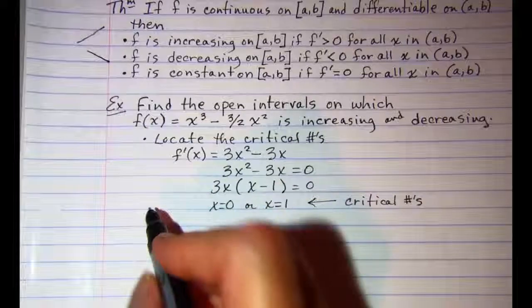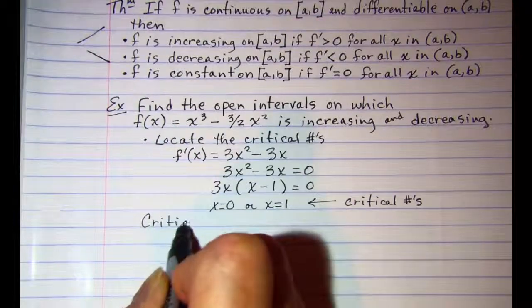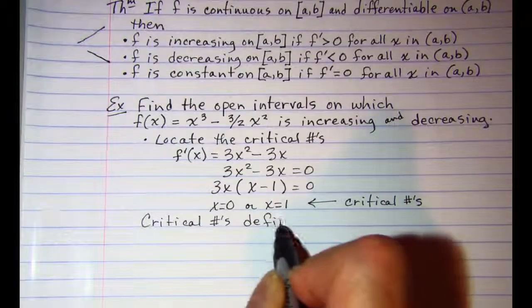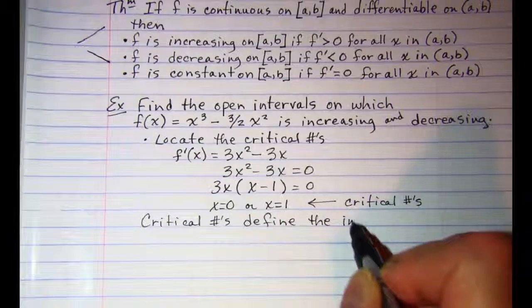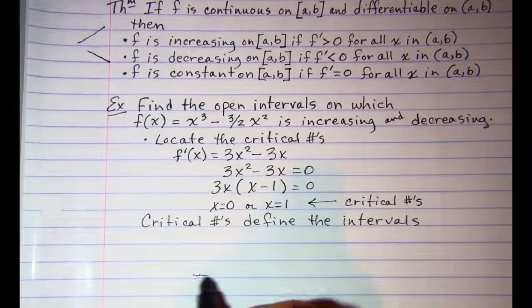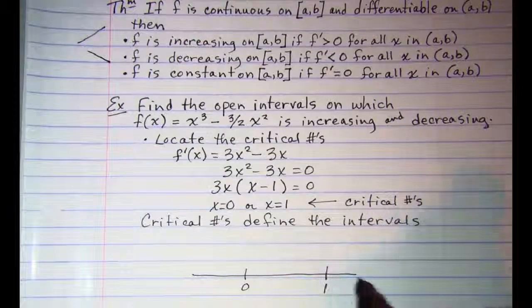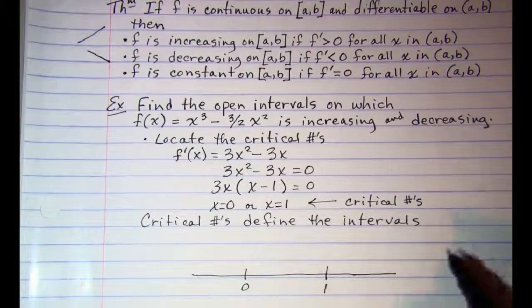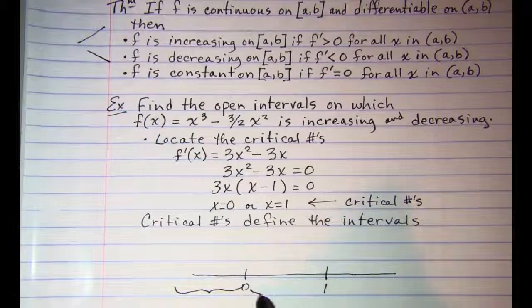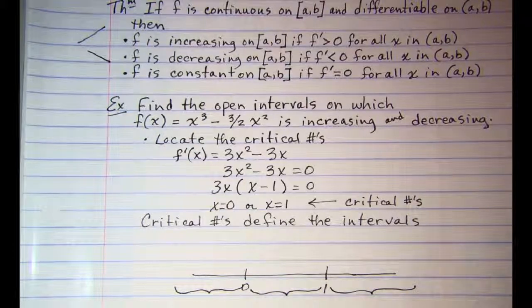Now these critical numbers define the intervals. So on our number line we have 0 and 1. We have the interval from negative infinity to 0, the interval from 0 to 1, and the interval from 1 to infinity.